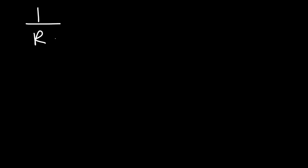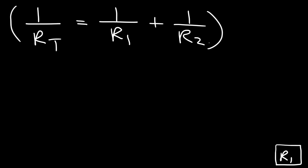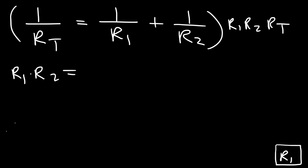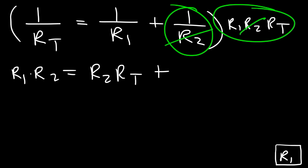This next equation gives us the total equivalent resistance of two resistors connected in a parallel circuit. Our goal is to solve for r1. The first thing I'm going to do is clear away all fractions by multiplying each fraction by the common denominator, which is r1 times r2 times rt. So 1/rt times (r1·r2·rt) — the rt's cancel, leaving r1 times r2. And 1/r2 times (r1·r2·rt) — the r2's cancel, leaving r1 times rt.